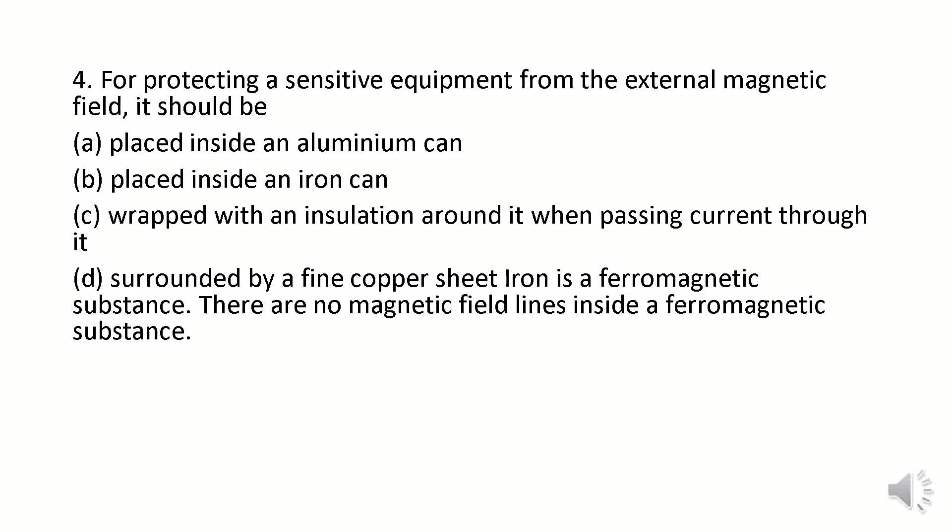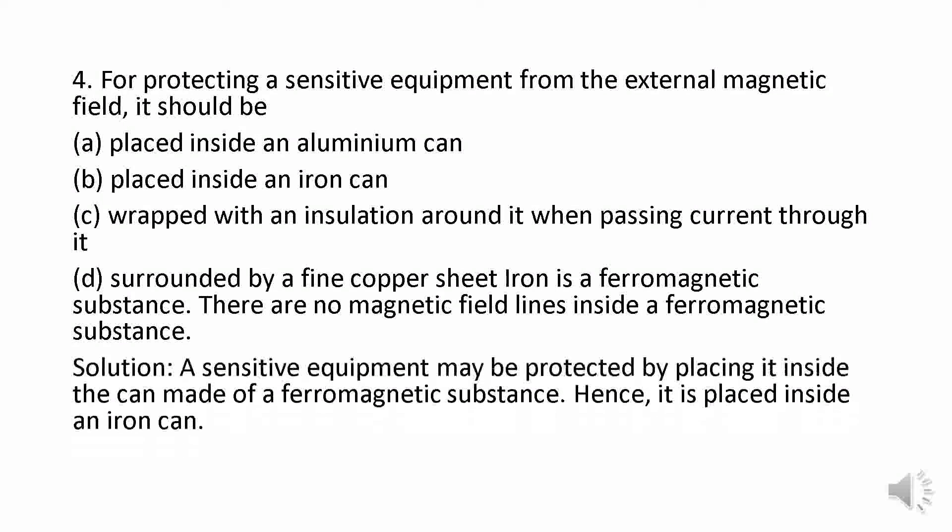To protect sensitive equipment from an external magnetic field, it should be placed in a can made of ferromagnetic material. Inside ferromagnetic material, there are no magnetic field lines. The can is made of iron. Therefore, the correct answer is option b. A sensitive equipment may be protected by placing it inside a can made of ferromagnetic substance. Hence, it is placed inside an iron can, and option b is the correct answer.